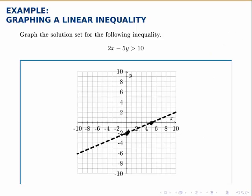Now to figure out which side to shade, I need to pick a test point and the origin is a good one in this case as well. Testing 2 times 0 minus 5 times 0, letting x and y both be 0, I test whether this inequality is true.